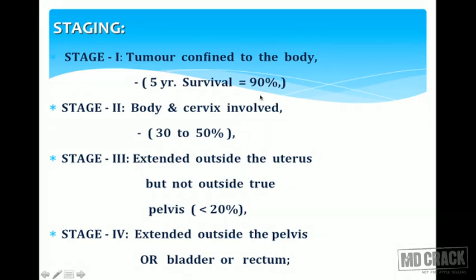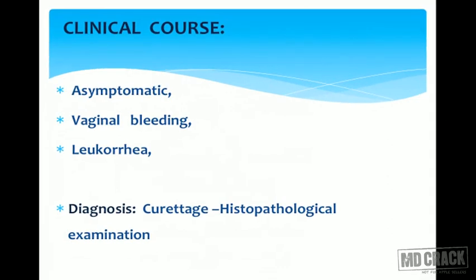FIGO staging of endometrial carcinoma: Stage 1, tumor confined to the uterine body with very good five-year survival rate, especially when involving only one-third of the myometrium. Stage 2, body and cervix involved, with 30 to 50 percent five-year survival. Stage 3, extension outside the uterus but not outside the true pelvis, with survival falling to less than 20 percent. Stage 4, extension outside the pelvis or involving adjacent organs like bladder and rectum, with very poor prognosis.